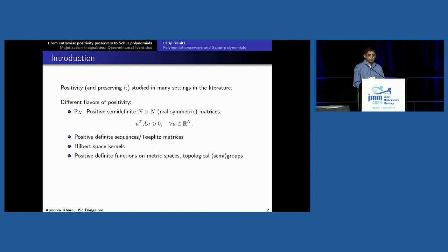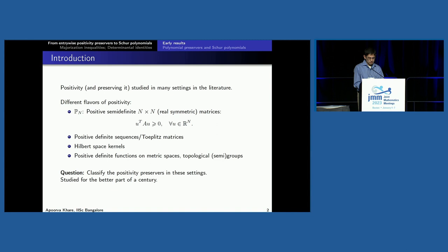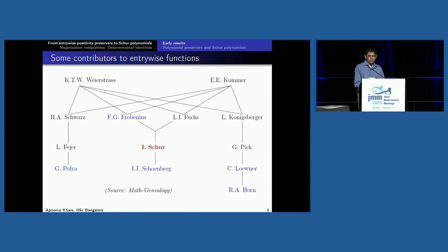There are several other notions of positivity. A question that has been studied for quite a while is to understand which operations preserve positivity in each of these settings. Here are some of the people who have worked on entrywise functions acting on matrices. The relevant people are in blue and Schur in red — they seem to be quite a tightly knit family. The youngest among them is Roger Horn, whom some know from the Bateman-Horn conjecture in number theory, and others from his famous books in matrix analysis with Charlie Johnson. Horn is 75 years old, so this goes back a long way.